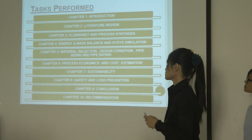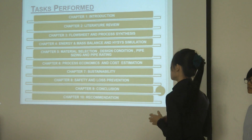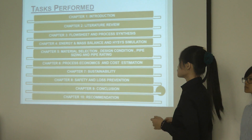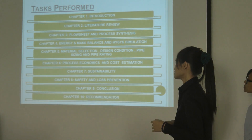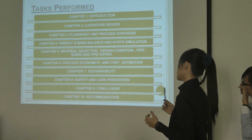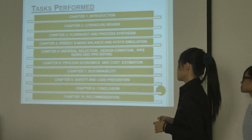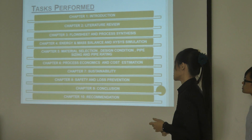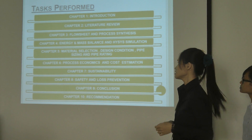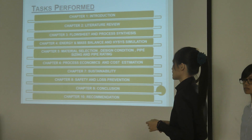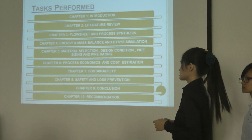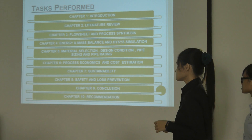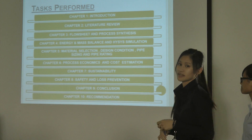Basically, these are the tasks we will perform throughout the whole semester. The first chapter is introduction, followed by literature review, close-chain and process synthesis, energy and mass balance, and HYSYS simulation. Chapter 5 is material selection, design condition, pipe sizing and pipe rating, followed by process economy and cost estimation. Chapter 7 is sustainability, followed by safety and loss prevention, and the last task is conclusion and recommendation.